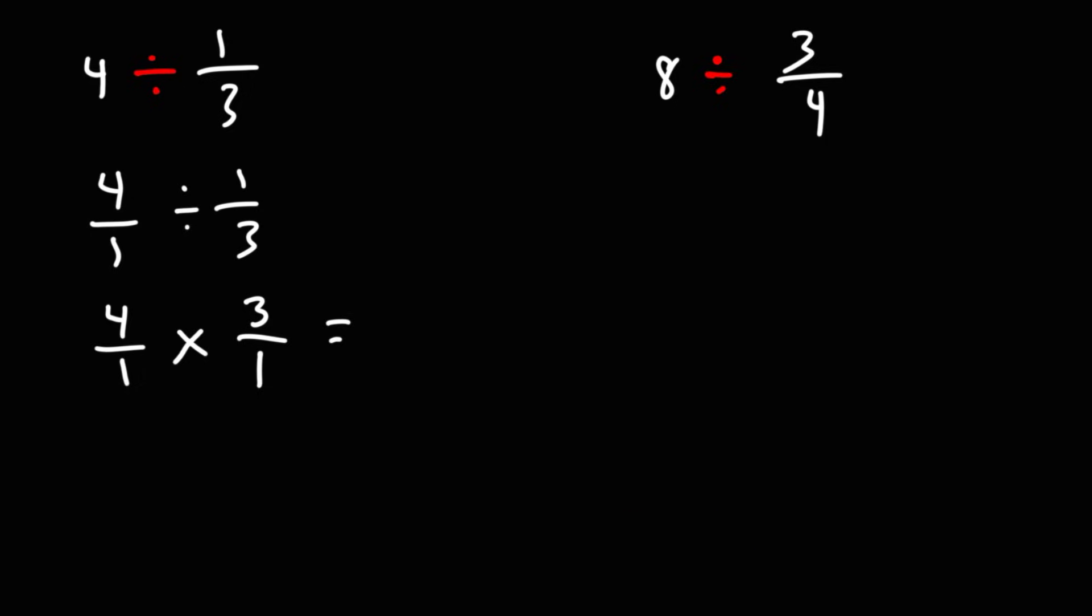So now we're multiplying two fractions which means we can multiply across. 4 times 3 is 12, 1 times 1 is 1, 12 divided by 1 is 12. So that's the answer for the first problem.